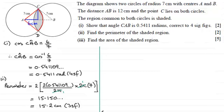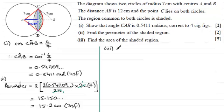For part three, we find the area of the shaded region. We'll work out half the shaded region — a segment — and double it. The area of a segment is found by calculating the area of the sector and subtracting the area of the triangle. Once we have the segment area, we double it to get the total shaded area.